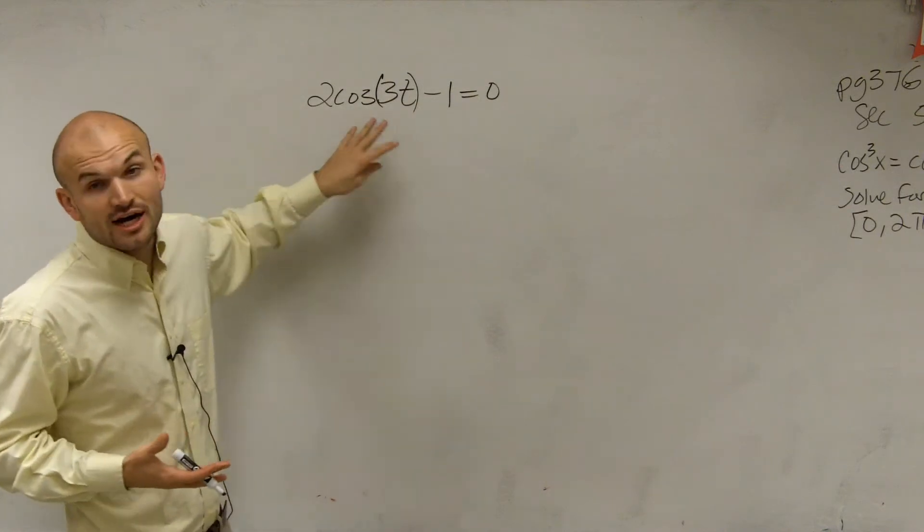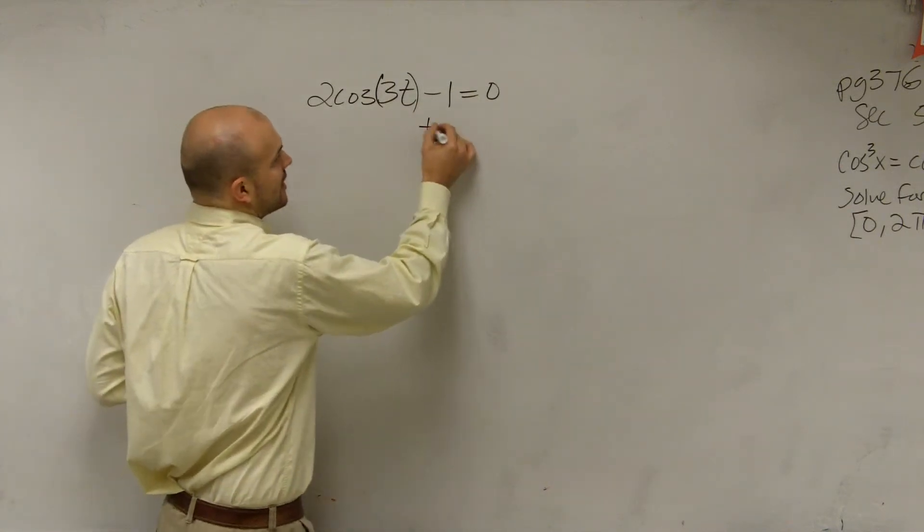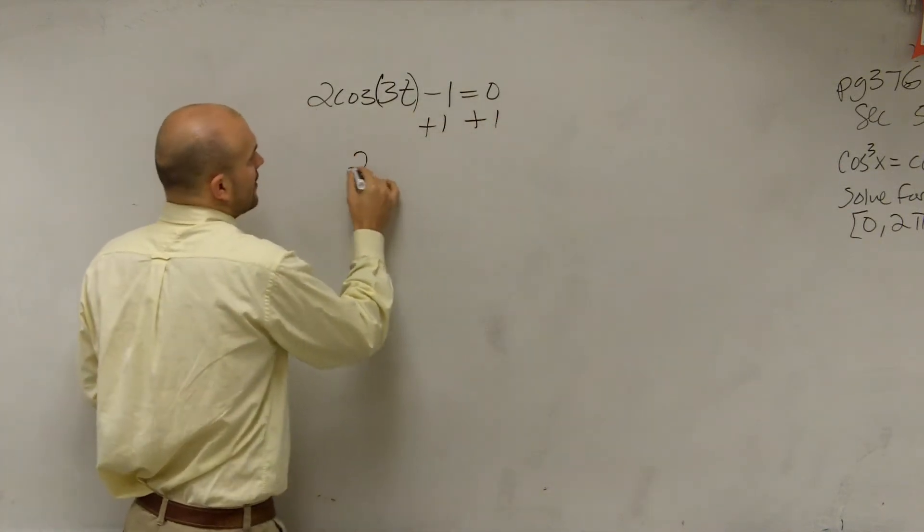So the first thing we need to do is we need to isolate the cosine. So we're going to follow our inverse operations like we've always done.